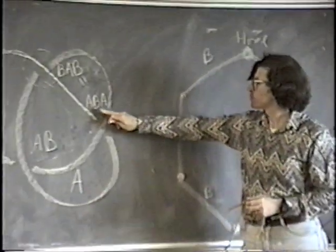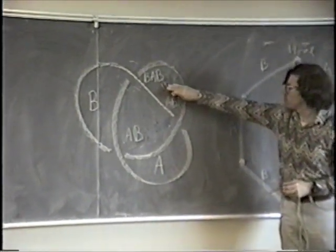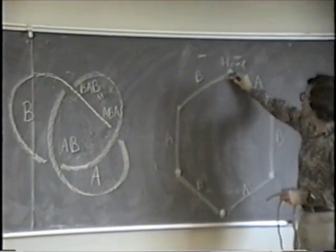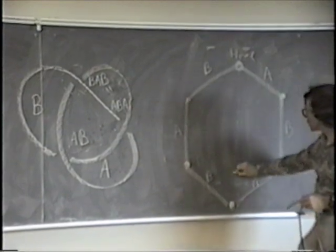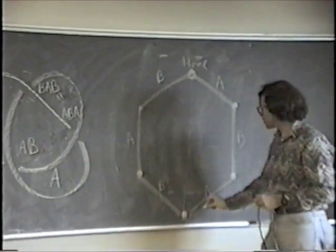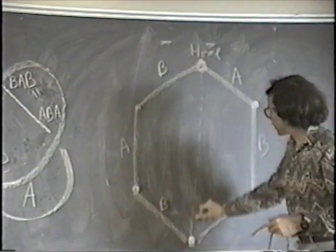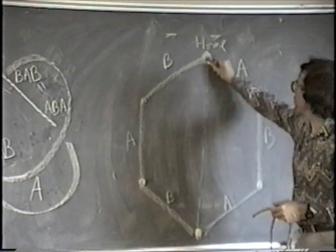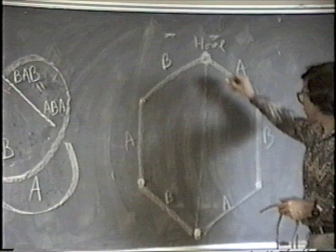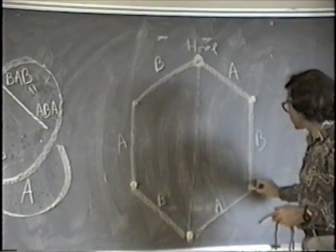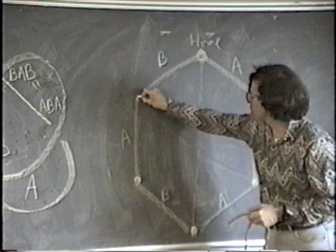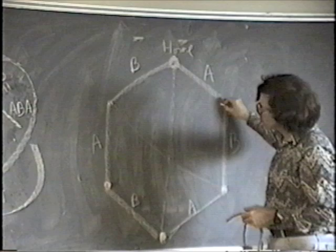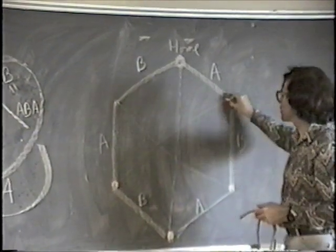The upper right passageway corresponds to going ABA. If you go ABA and then ABA again, you get back where you started — it's an order-two operation. If you're at one node and do ABA, you get to the adjacent node; do it again and you get back. From another node, ABA takes you across and back again.